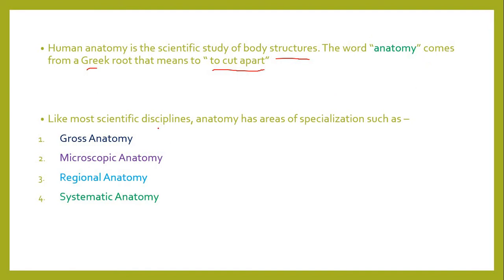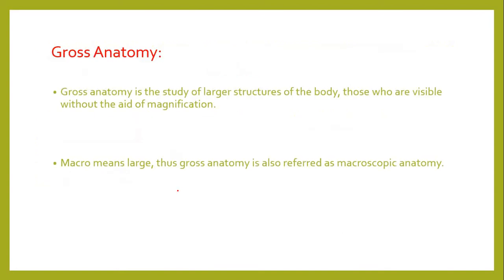Like other sciences, anatomy is also a science and a part of biology, and it has different disciplines. Anatomy has areas of specialization such as: first, gross anatomy; second, microscopic anatomy; third, regional anatomy; and fourth, systemic anatomy.